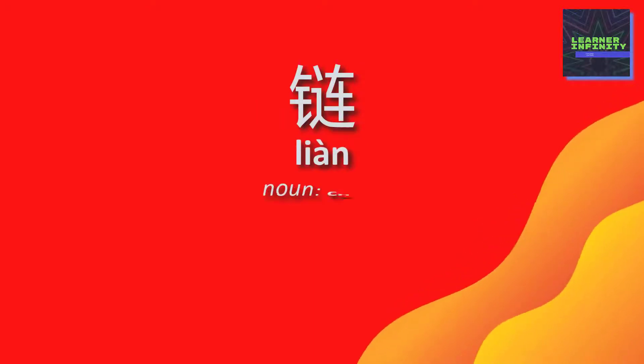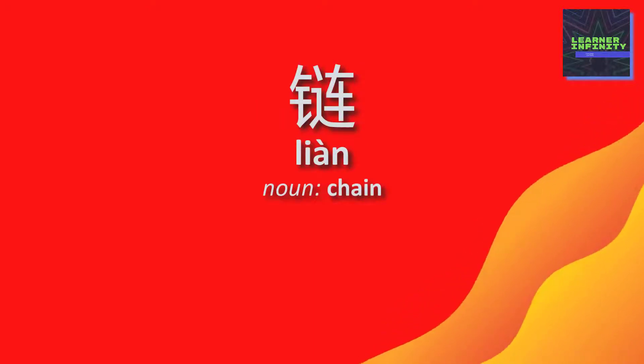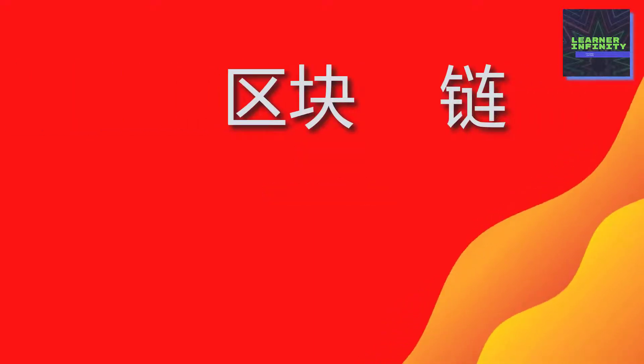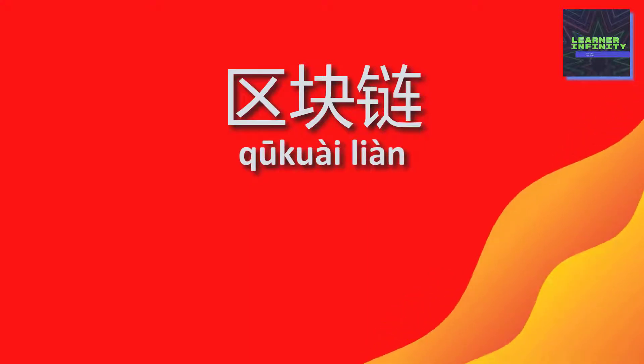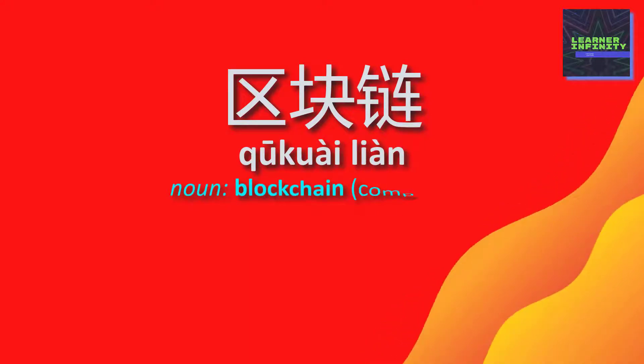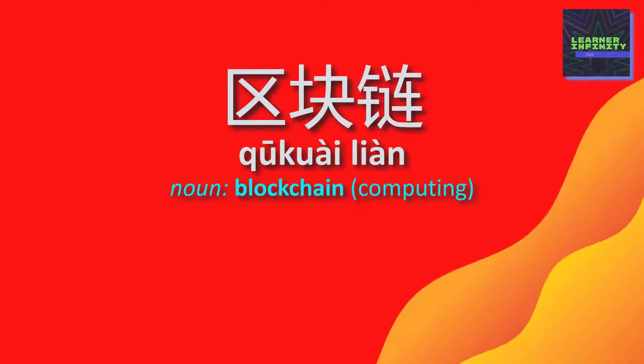链 is a noun which means chain. Putting these two words together, 区块链 is easy to guess — it means blockchain.